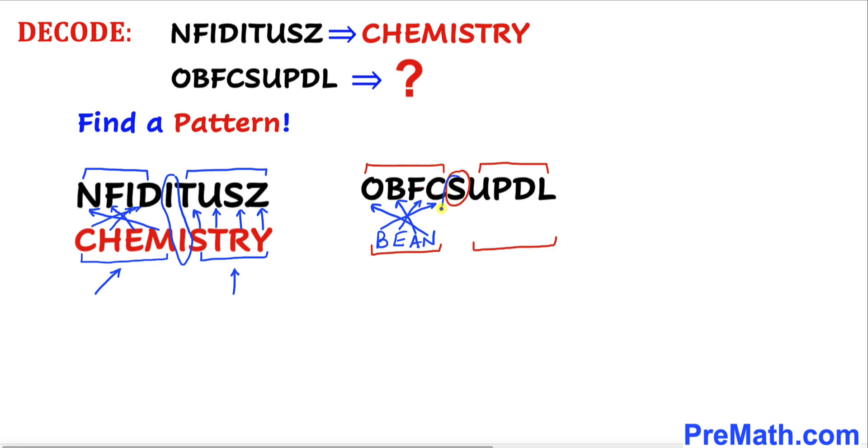goes to L, C goes to D, O goes to P, and T goes to U. Therefore, our decoded word turns out to be BEANSTOCK. Thus, our decoded word turns out to be BEANSTOCK. Thanks